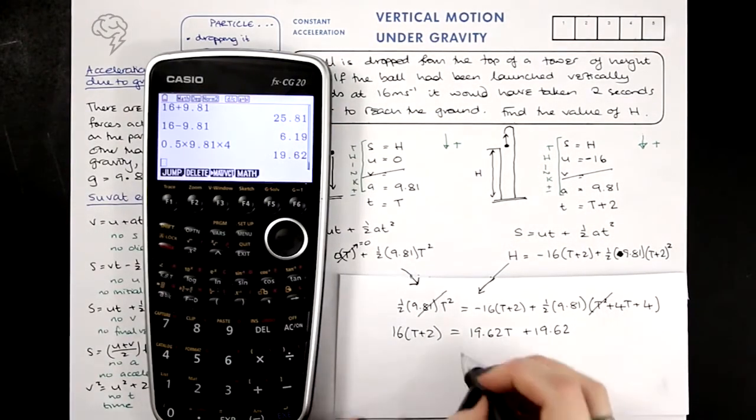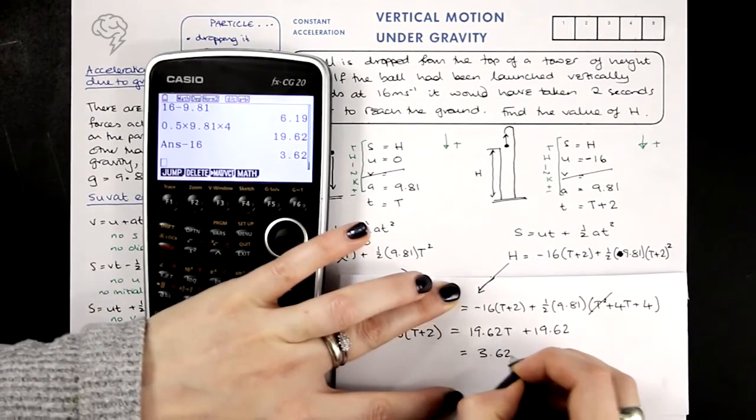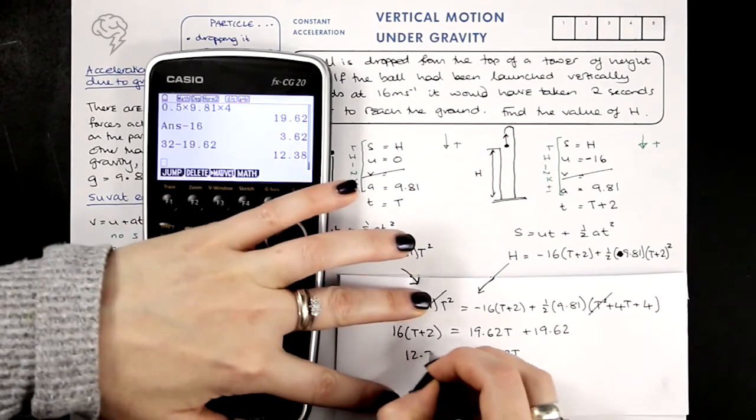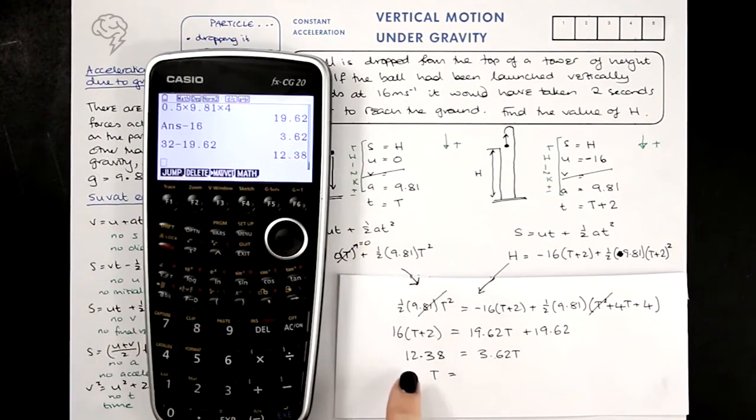So if we put T's on this side of the equation, I've got 19.62 minus 16 T's is 3.62. And then on this side of the equation, I've got 32 minus 19.62, which is 12.38. So dividing that under there, I get T equals 12.38 divided by 3.62, which is 3.42.